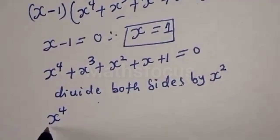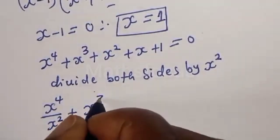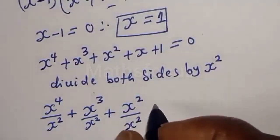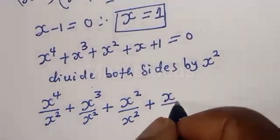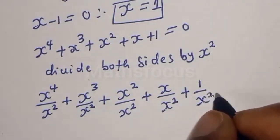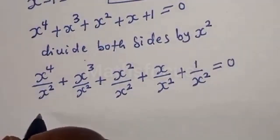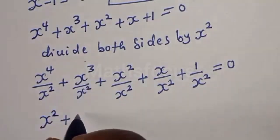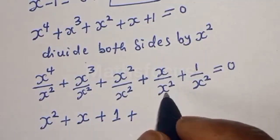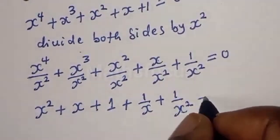Then let's divide all through by x squared. We get x raised to power 4 over x squared, plus x raised to power 3 over x squared, plus x squared over x squared, plus x divided by x squared, plus 1 divided by x squared, is equal to 0. This simplifies to x squared plus x plus 1 plus 1 over x plus 1 over x squared, is equal to 0.